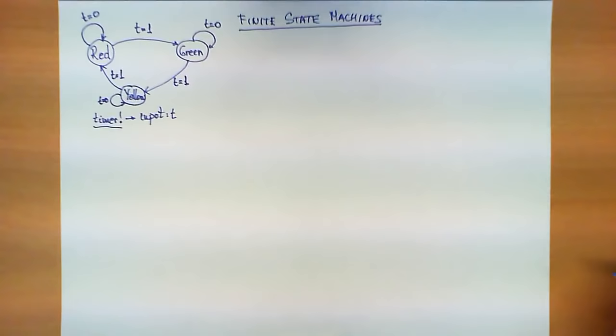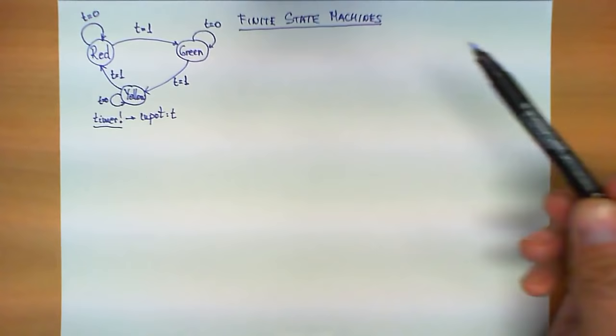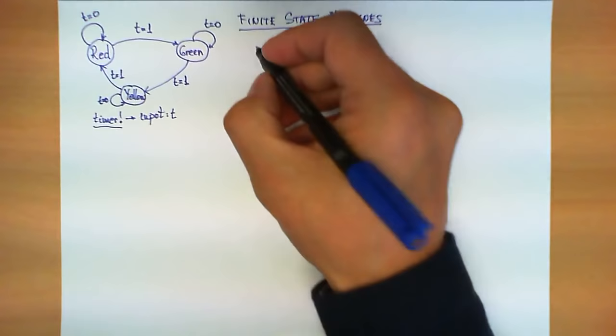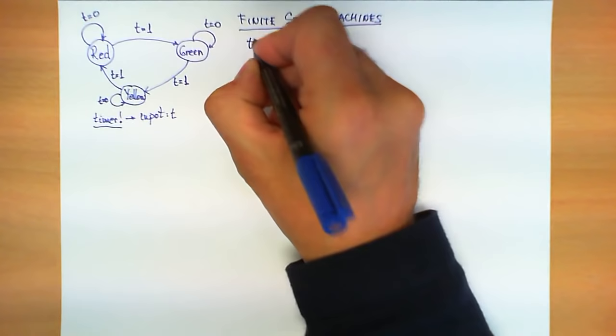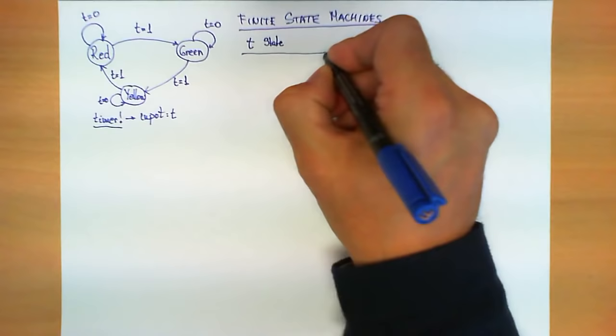This diagram we have here is what we call a finite state machine. It's a machine that makes transitions from state to state based on basically two conditions: the state in which we are currently, and the value of certain inputs. In terms of Boolean logic, we can represent this transition as a truth table. We can write what are the conditions such that for any given value of T and the current state, we calculate the next state of the machine.